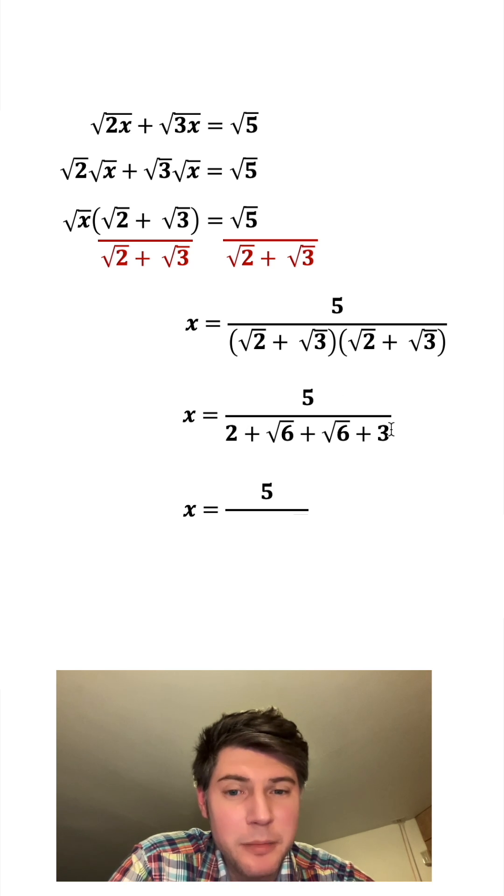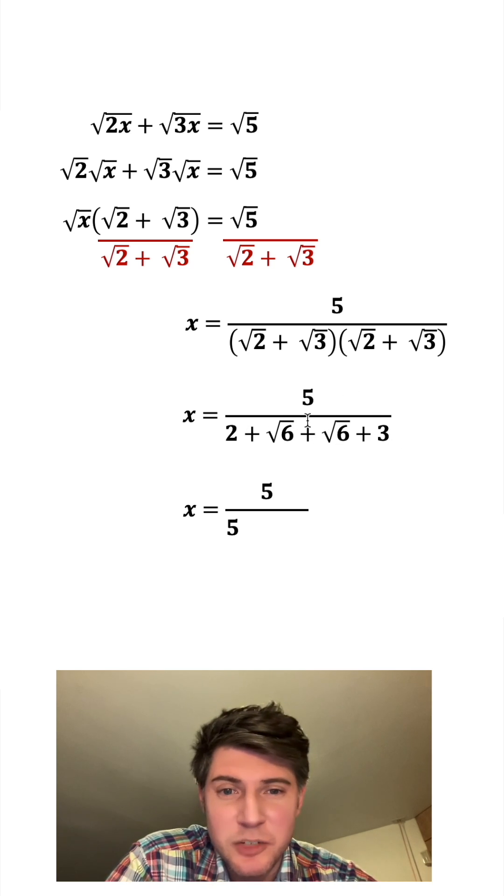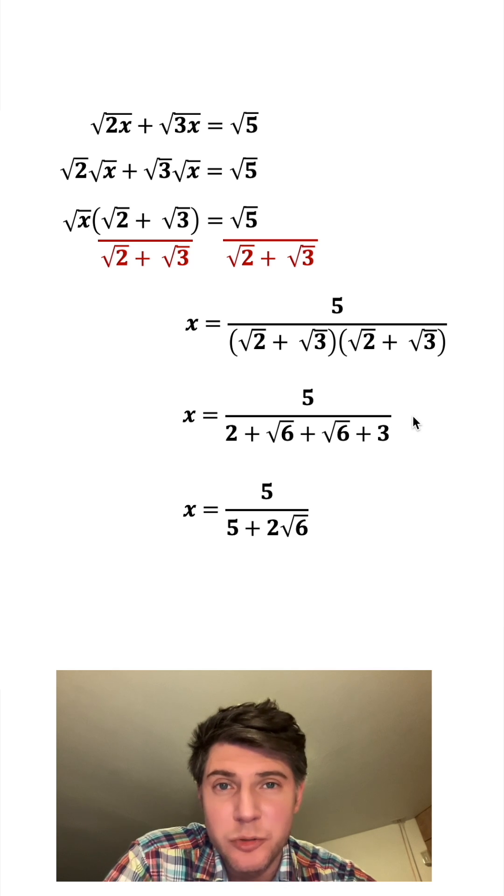The 2 plus the 3 on the bottom can become 5, and square root of 6 plus square root of 6 just means we have two of these, so we call it 2 square root of 6.